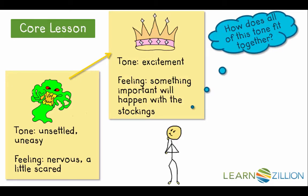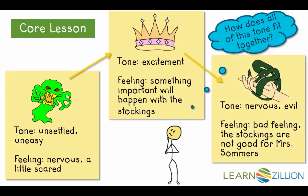The tone in the story is changing, and we've gone from uneasy to excited. The last example is that comparison between the stockings and a serpent. The tone of the story has once again changed. Once Mrs. Sommers actually gets the stockings in her hand, the tone shifts from one of excitement to nervous and evil. By putting all of my thinking together, I can see how the tone of the story also reflects the development of Mrs. Sommers' character.